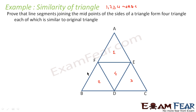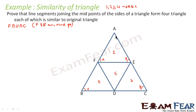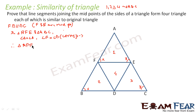Since F and E are midpoints of AB and AC, we can say that FE is parallel to BC by the midpoint theorem. Since FE is parallel to BC, this angle — let's call it X — will be equal to the corresponding angle X on the other side. Similarly, if this angle is Y, the corresponding angle is also Y. So in triangle AFE and triangle ABC, angle A equals angle A by construction, and angle F equals angle B as corresponding angles. Therefore, triangle AFE is similar to triangle ABC.